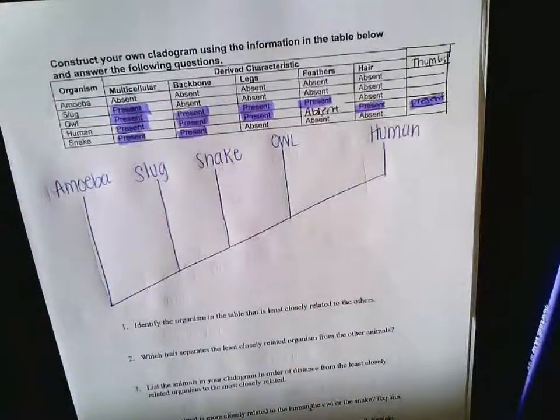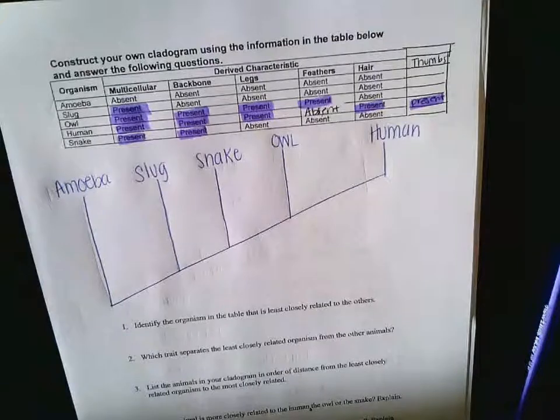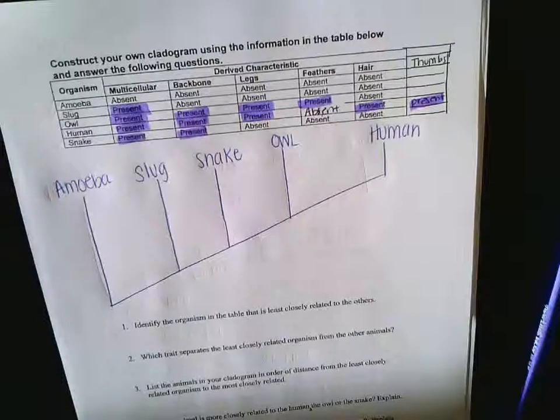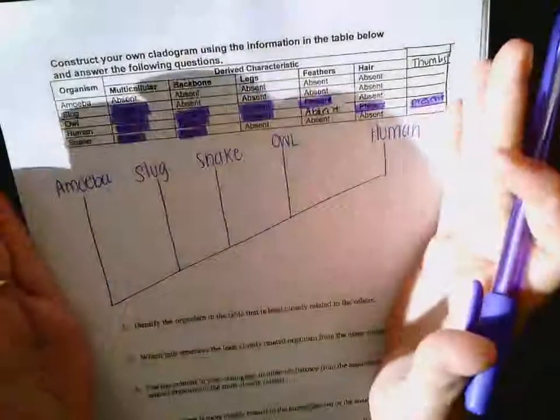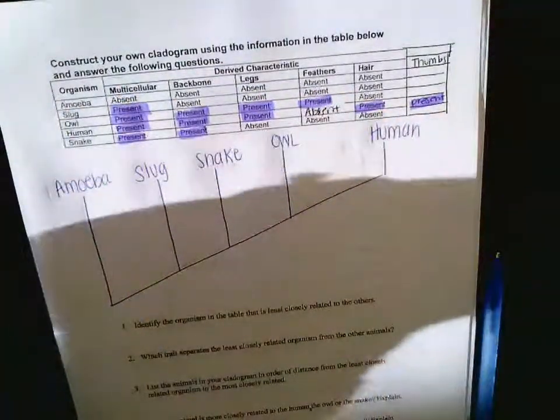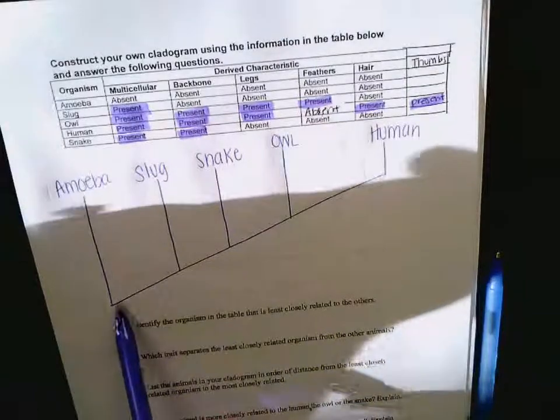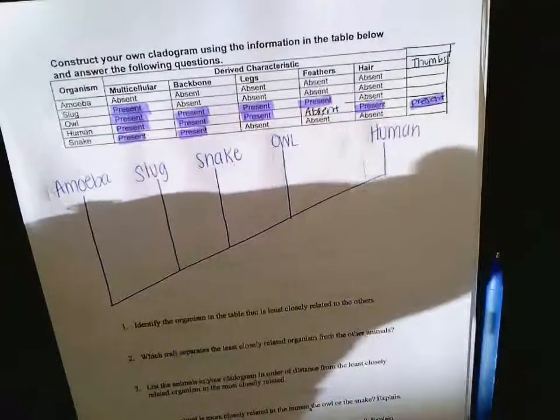Does everyone feel like they could have done that? Yes, maybe, no? Thumbs yes, maybe, no? Excellent. Now let's look at traits. So first thing is you do the scale. The second thing is what is actually present. So what separates the amoeba from the slug in terms of all these derived characteristics?